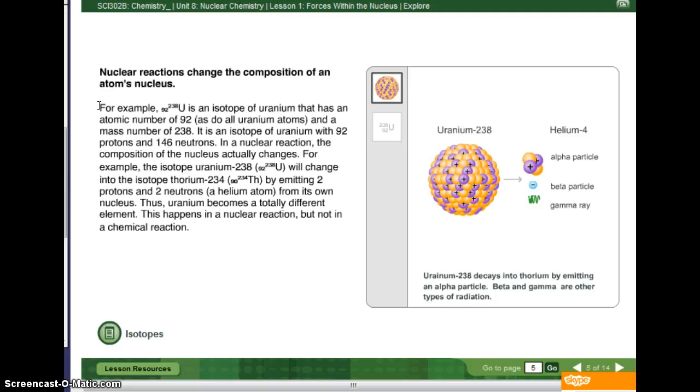So, for example, 92, 238 uranium is an isotope of uranium that has an atomic number of 92. And remember, all uranium atoms have an atomic number of 92. That means they have 92 what? Protons. And a mass number of 238. So, if you add the protons and the neutrons, you get 238. It is an isotope of uranium with 92 protons, 146 neutrons.